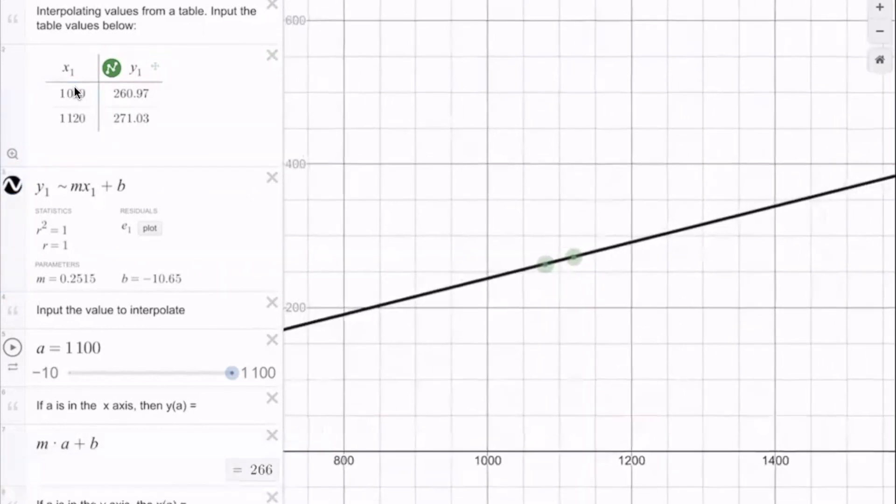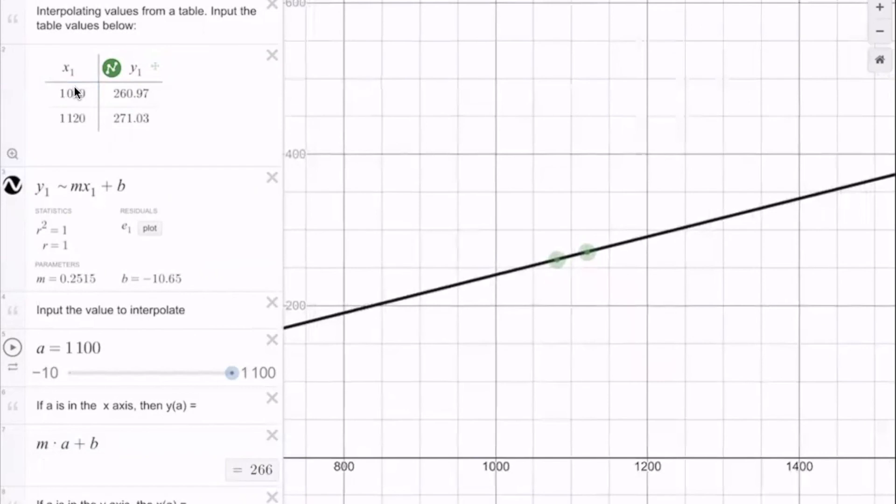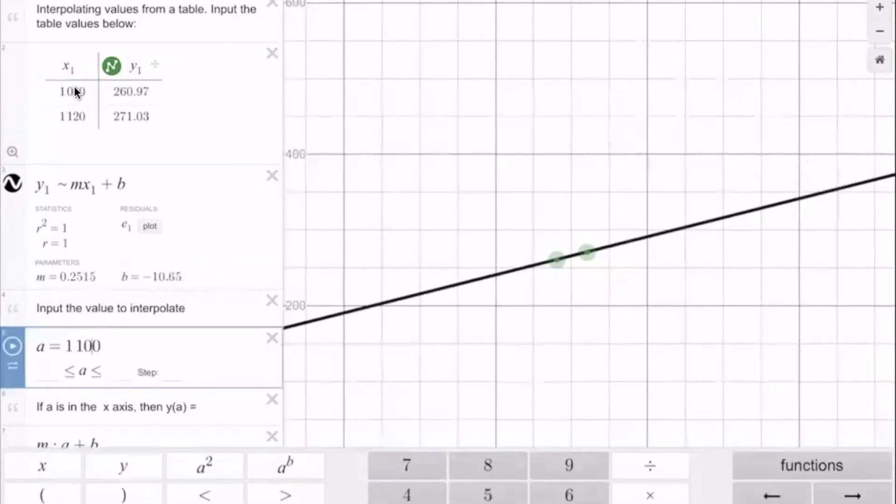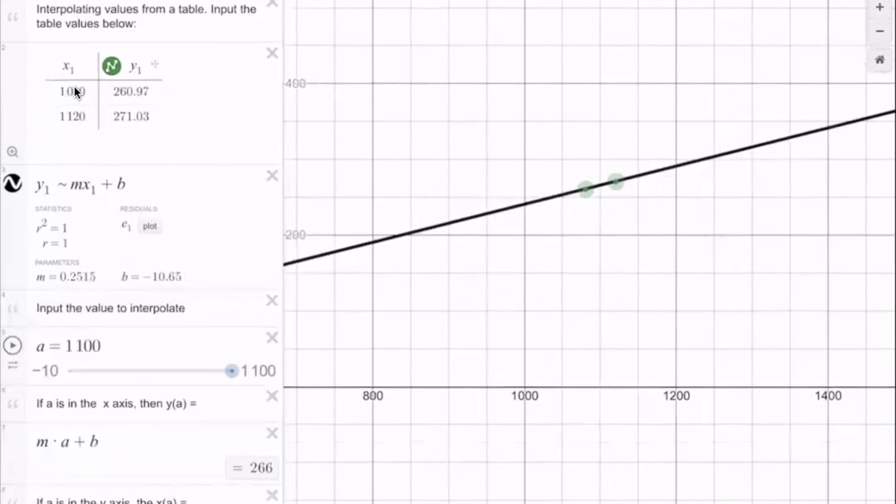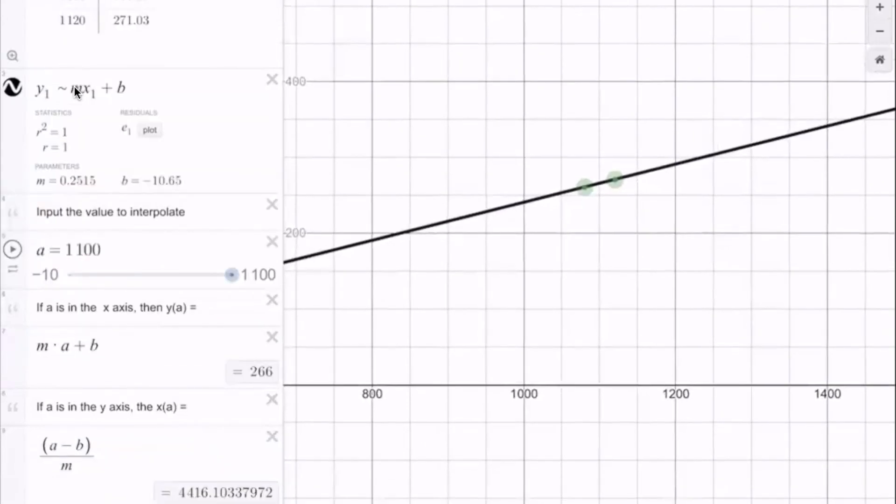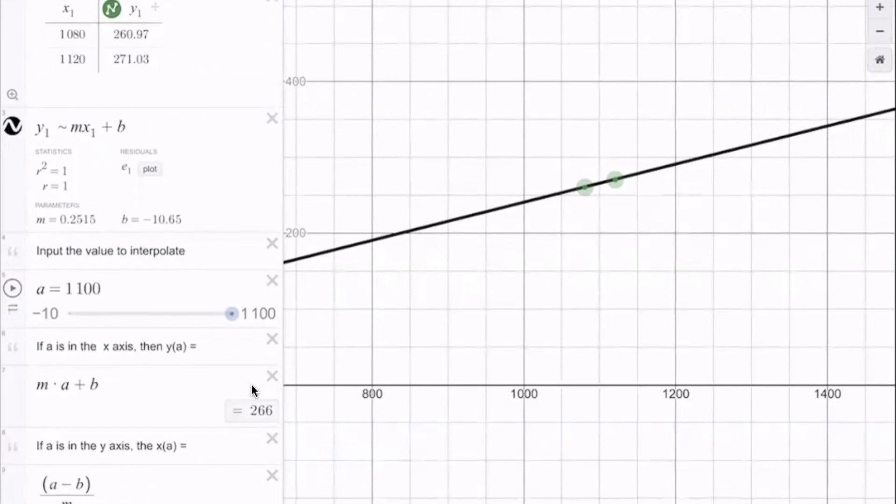It's actually plotting the function and these are the two points in the table. Then in this box you input the value that you want to interpolate, in this case it's 1100, and the result is m multiplied by a plus b and the value is 266. If you swap the columns instead of x put y and instead of y put x, you can find the inverse relationship here at the last row.